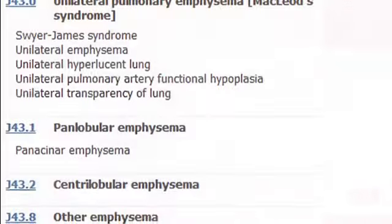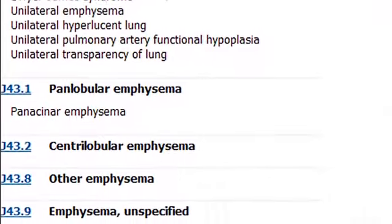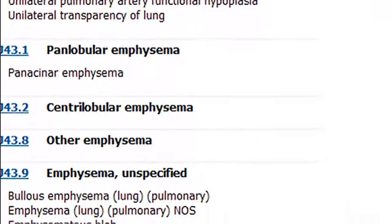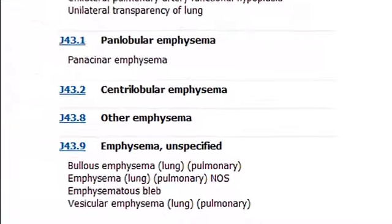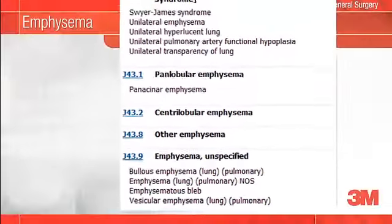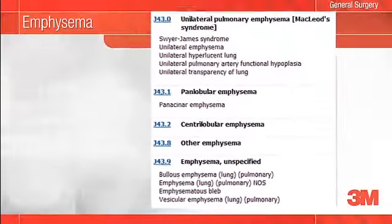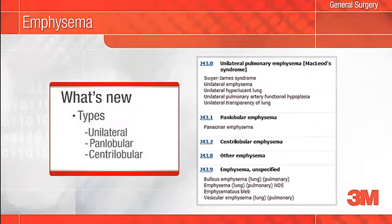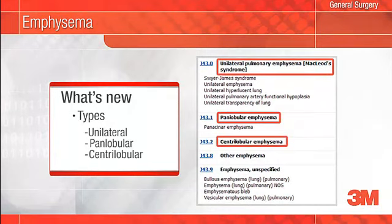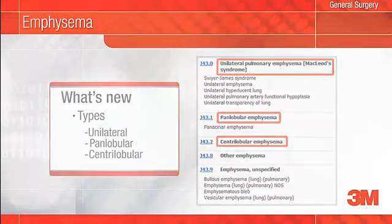Most types of emphysema were grouped into a single ICD-9 code. What's new in ICD-10 is that separate codes are provided for specific types of emphysema. When you document the specific type of emphysema such as unilateral, panlobular, or centrolobular, a unique ICD-10 code for that condition can be reported.